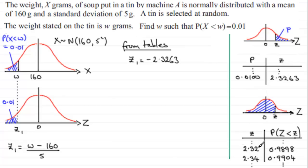So, it's up to you. You get a slightly more accurate result if you use this value. If I was using these tables, my Z1 value would be minus 2.32. So where do we go from here? We can just work with this equation. We know that Z1, this value here, we can say therefore minus 2.3263. My Z1 value is equal to W minus 160, all divided by 5.